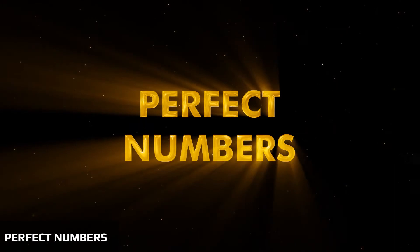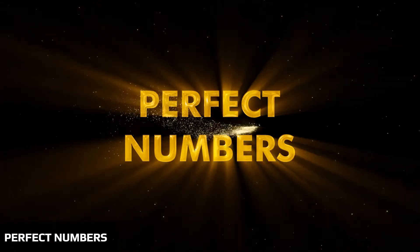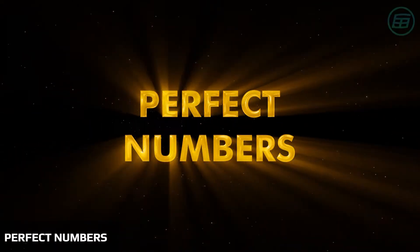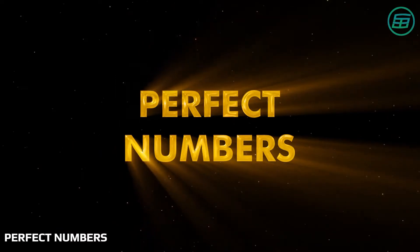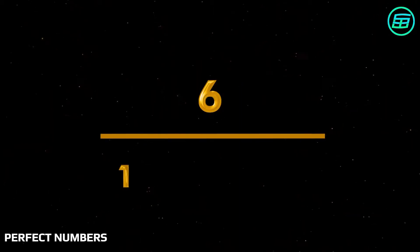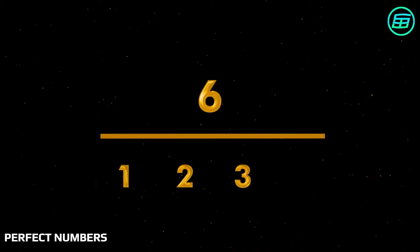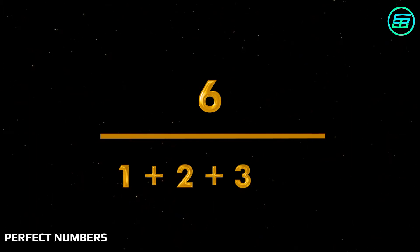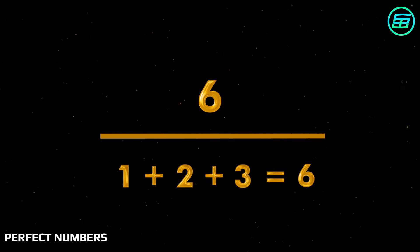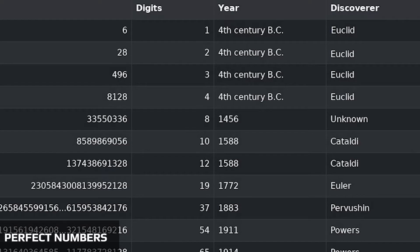What is a perfect number in number theory? A perfect number is a whole number that's equal to the sum of all its factors except itself. For example, the number 6 can be divided by 1, 2, and 3 without a remainder. If we add these numbers we get 6, so 6 is a perfect number. The next few perfect numbers are 28, 496, and 8128.